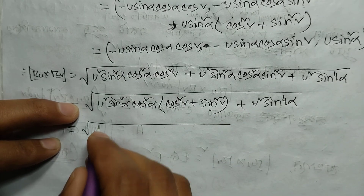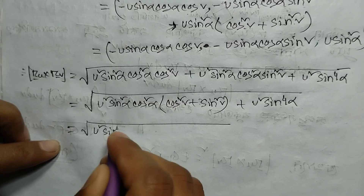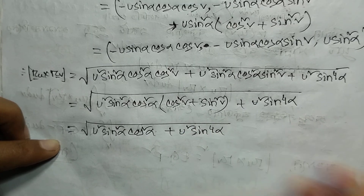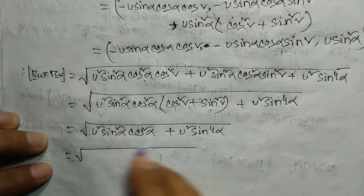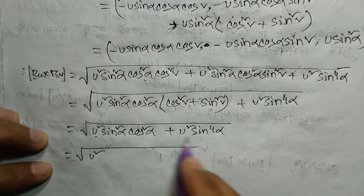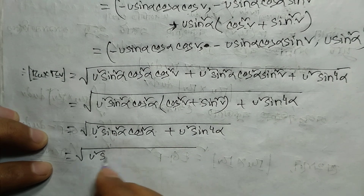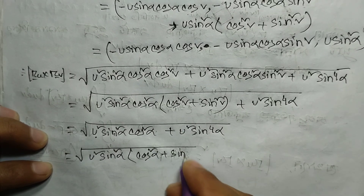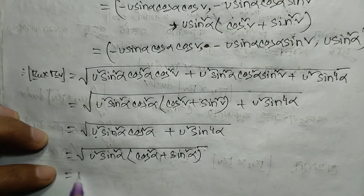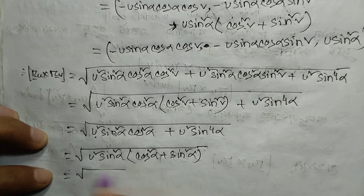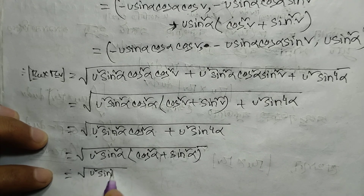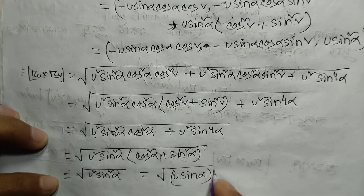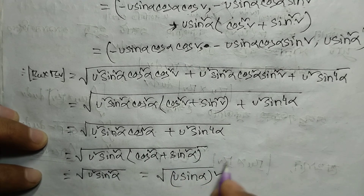The module: we have sine squared alpha into cosine squared alpha, plus u squared times sin to the power 4 alpha. Taking common factors: sin squared alpha out. Then cos squared alpha plus sin squared alpha inside equals one. So we get u squared sin squared alpha, and then u sinα remains after taking the root.